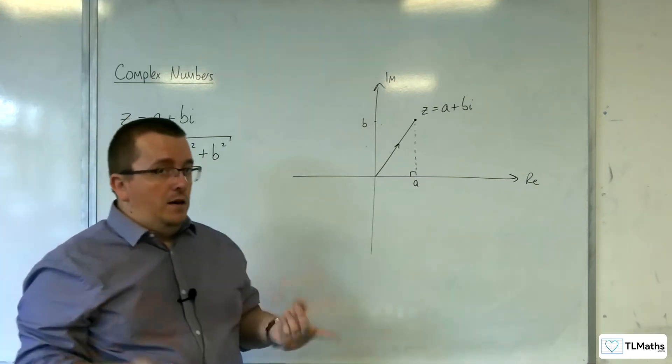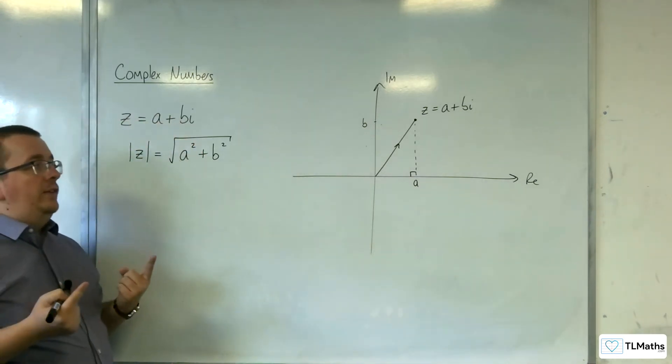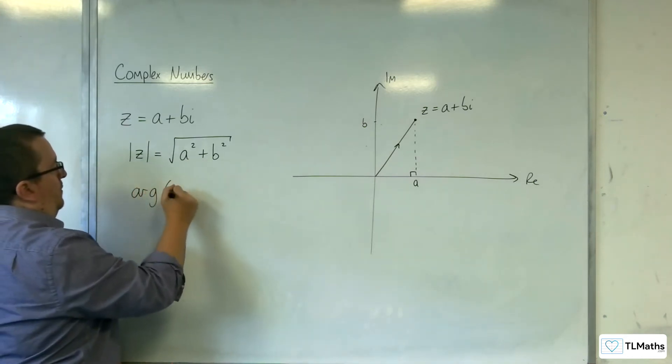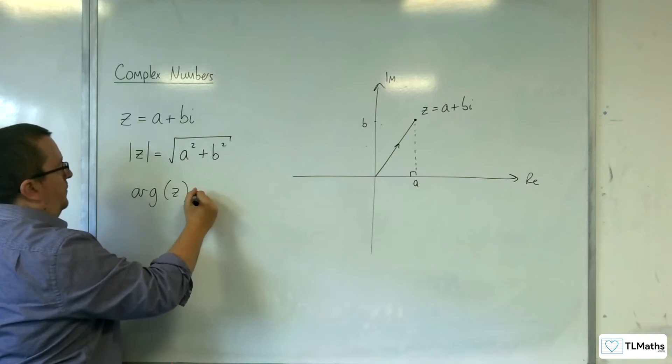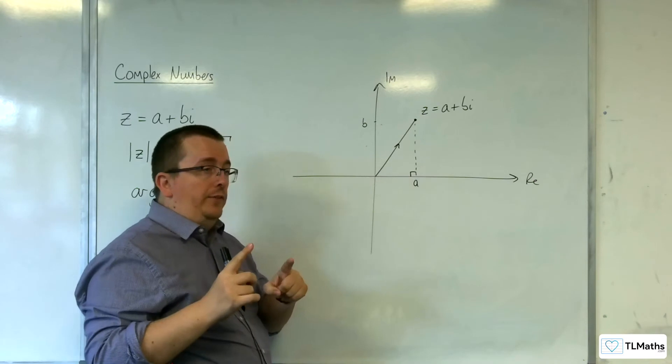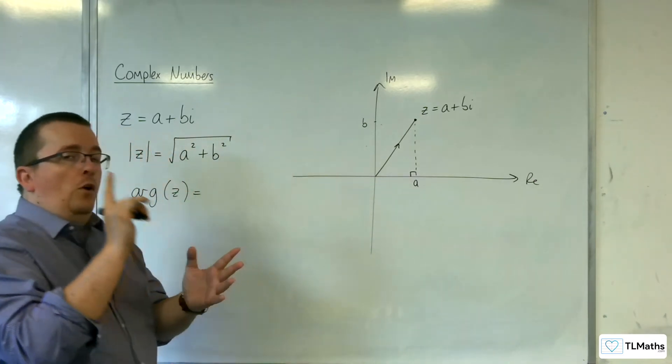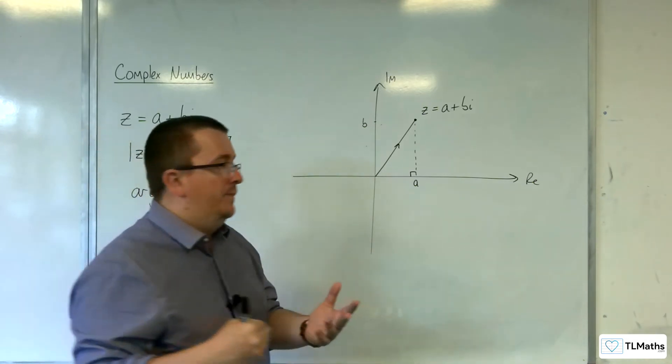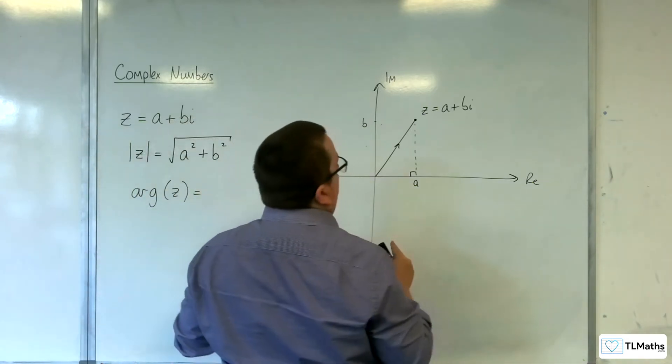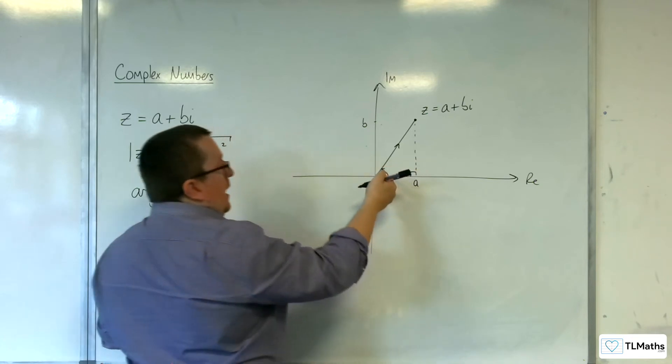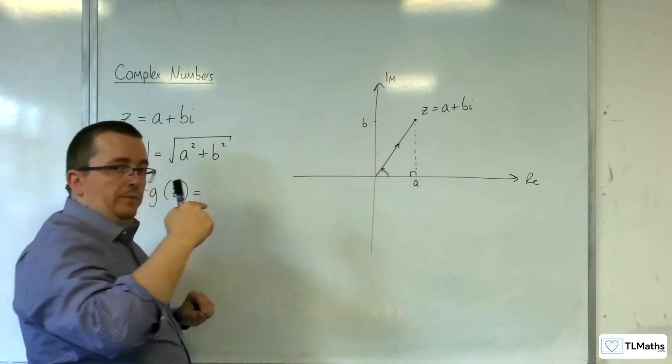As for the argument, the argument is the direction in which it's pointing. The argument of my complex number is the angle that it makes with the real axis. It depends on whether your complex number is above or below the real axis. If it's above, like mine is, then the argument is the angle measured from the real axis going anti-clockwise round.